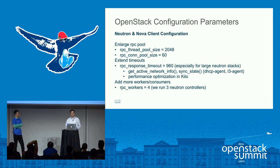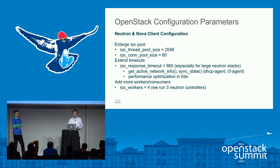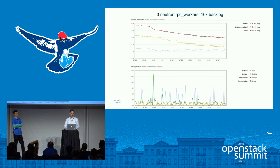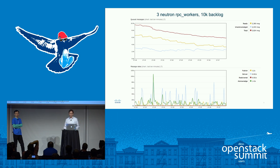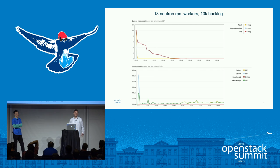Another thing we really needed to do was increase the amount of RPC workers. We currently have this tuned to around four per each controller, so with three Neutron servers, they'll be running four workers each. With only three Neutron RPC workers originally, if there were 10,000 messages in the backlog, it could take almost an hour for Neutron server to catch up. When we increased that six-fold to 18, we saw it could very quickly consume all the messages, catch up, and the cluster was much more stable.